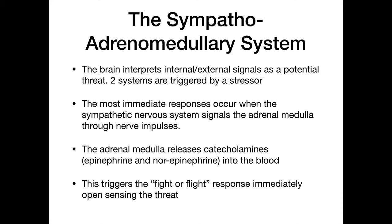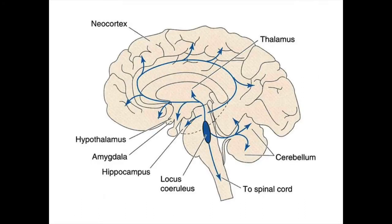There's a lot more detail to the fight-or-flight response, but one interesting part is the locus coeruleus norepinephrine system. This describes a concentrated nucleus of norepinephrine-containing neurons located in the pons of the brain — between the brainstem and the medulla oblongata. These neurons innervate most of the central nervous system.